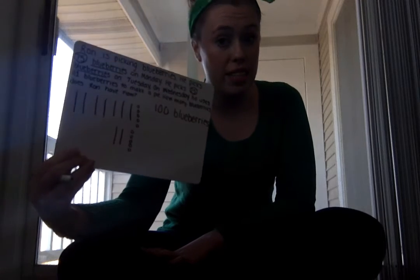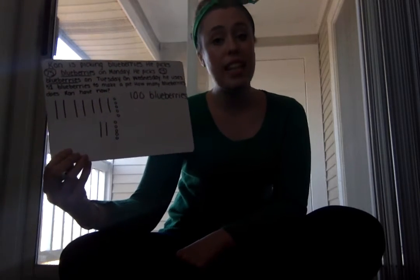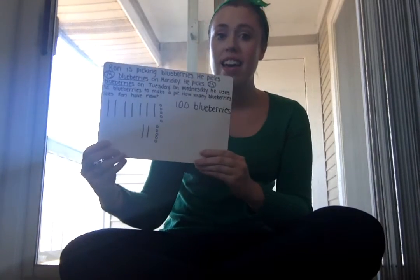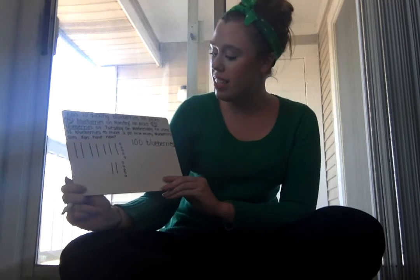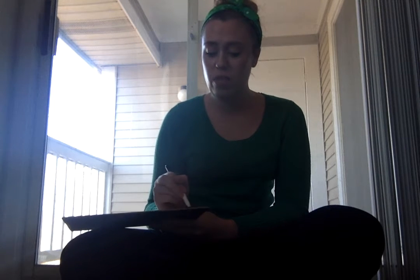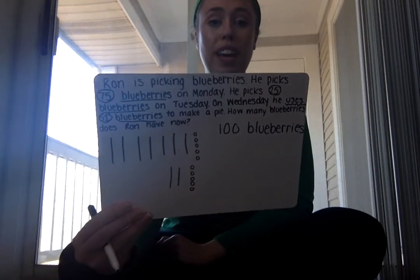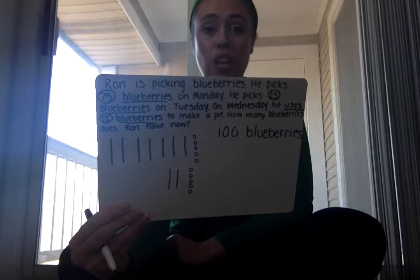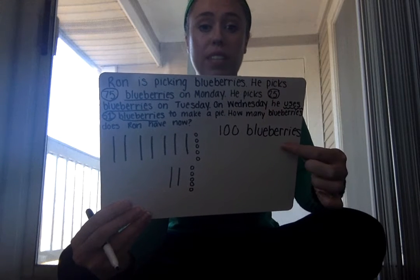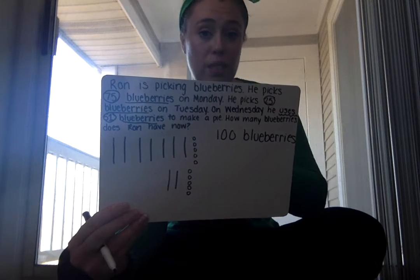But something else happened in this problem — we're not done yet. This is our two-step problem. Step one was adding up how many blueberries he picked. But now I need to see what he does next. Looking back at the problem, on Wednesday he uses 51 blueberries. That keyword 'uses' means I need to get rid of them — I need to subtract them out. I need to take the 100 blueberries and subtract the 51 he uses to make his pie.